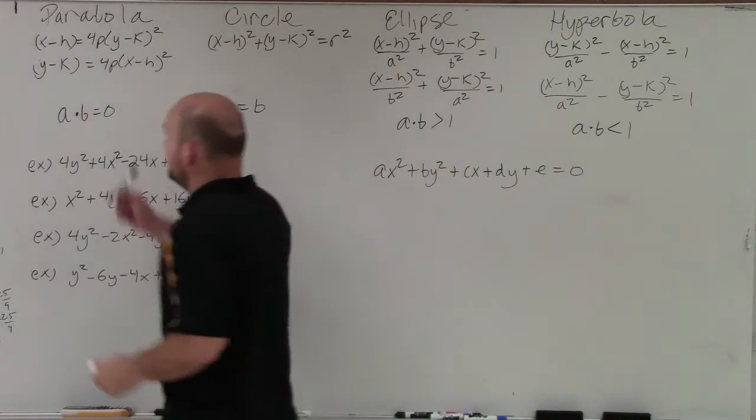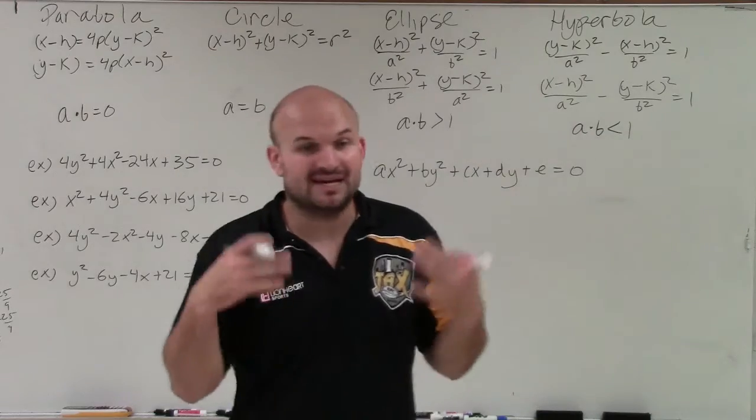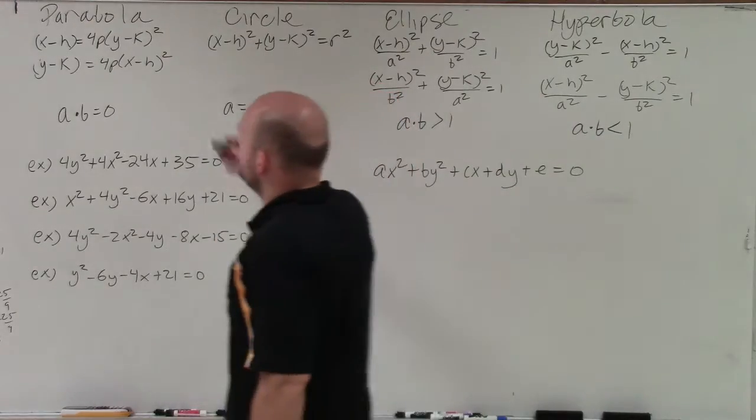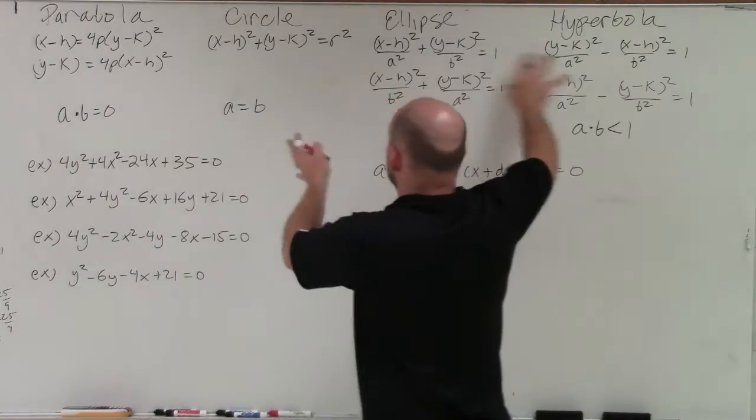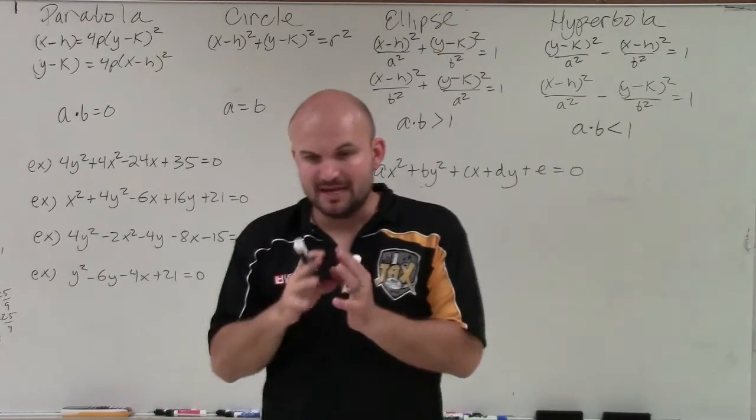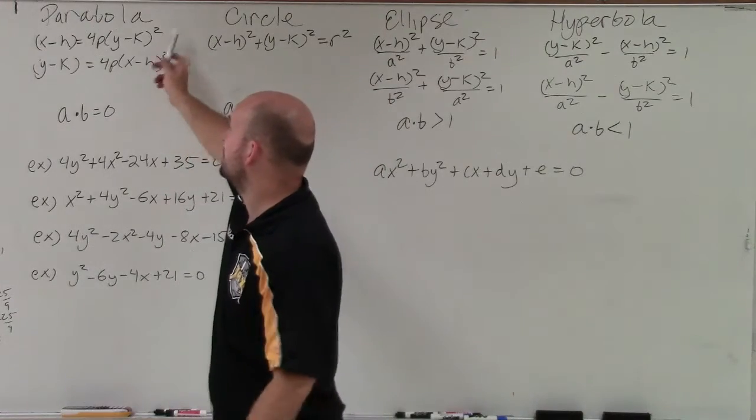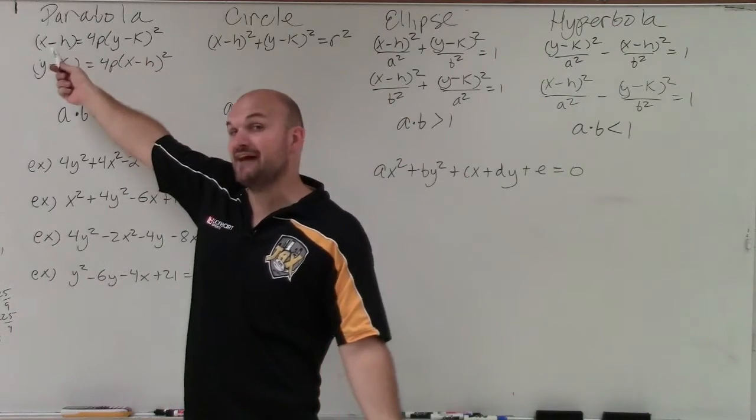Now, the reason why this works for a parabola, the reason why a times b equals 0 is going to tell you it's a parabola, because when you look at this, if you were to expand, we've got to think about all these binomial squareds we're going to be expanding. If you expanded this out, you would only have y². You would not have an x².